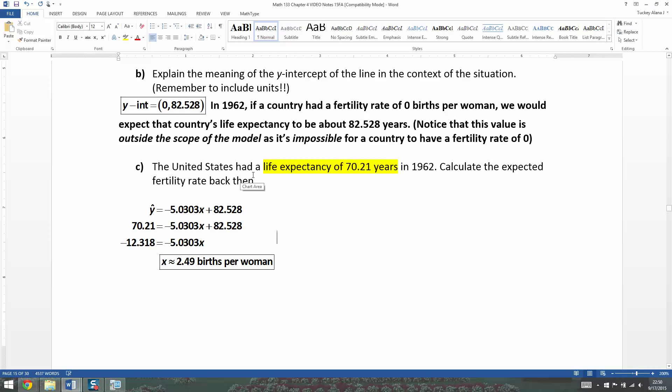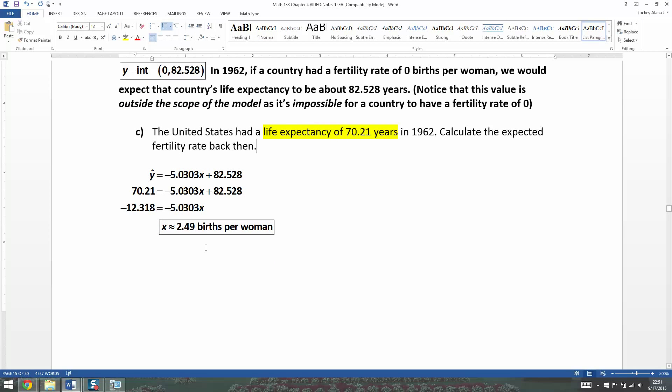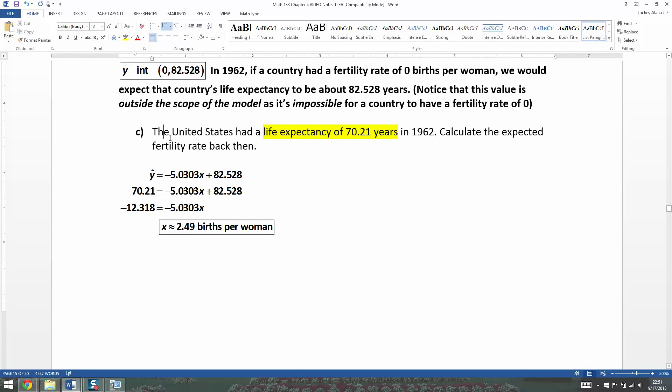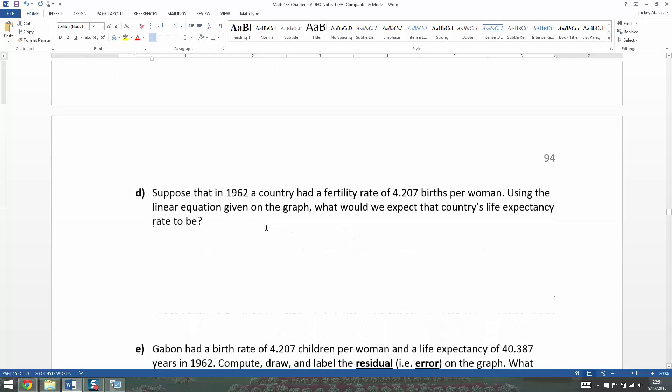And there we have it. So this particular one, you were given the y value of 70.21, right? And then you had to find the x value. Of course, we could do it in reverse and give you the x value and ask you to find the y value. Both of those are valid things. This is actually the more difficult of the two right here.